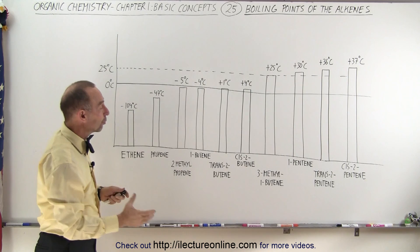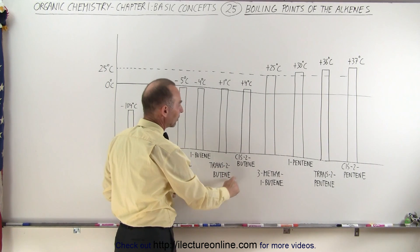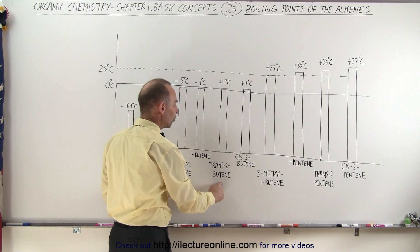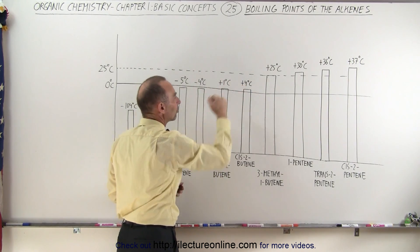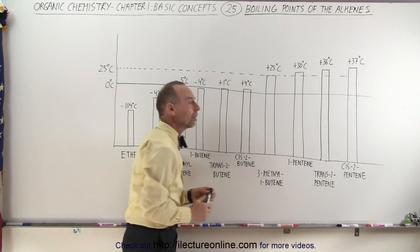It's not a lot of difference, so notice also that it would be very difficult to separate cis-2-butene from trans-2-butene because the boiling points are so close together, especially for the cis and trans-2-pentene molecules.